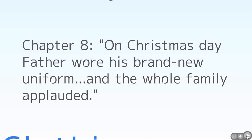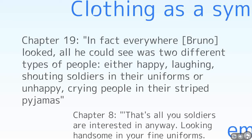A really obvious example is the father's uniform, which he's very proud of. A lot of particularly young, misguided youths in Germany were taken advantage of — they wore the uniform and thought they were important, perhaps not thinking too much about what they were actually doing. What the Nazi leadership and military committed was war crimes and atrocities — indefensible. Bruno's grandmother is not a fan; she does not support what he's doing and is disgusted by it. In chapter 19, you see the two different groups: the people in the striped pyjamas — the Jewish prisoners in their prison uniforms — and the guards, the Nazis, laughing and joking around.